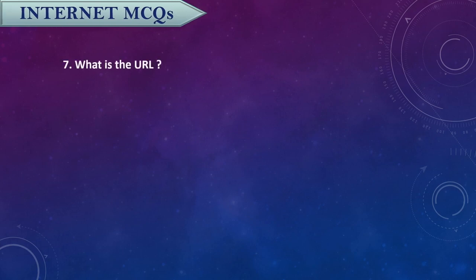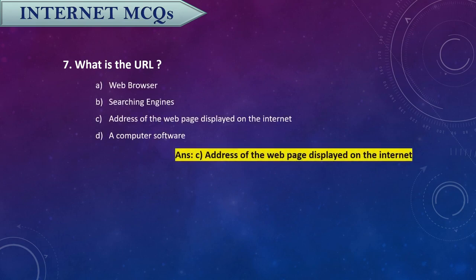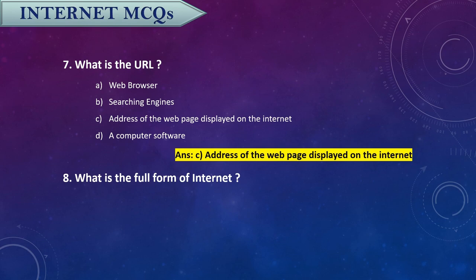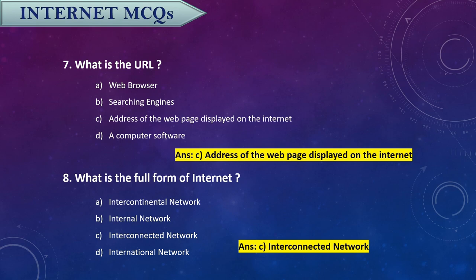Question seven: What is the URL? URL is the address of the web page displayed on the internet. Question eight: What is the full form of internet? The full form of internet is interconnected network.